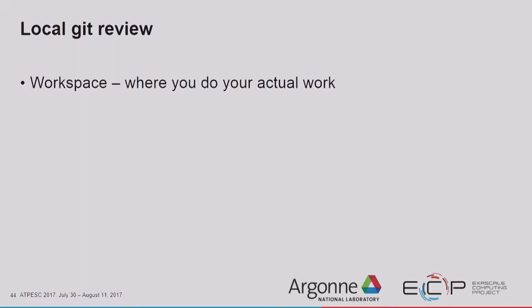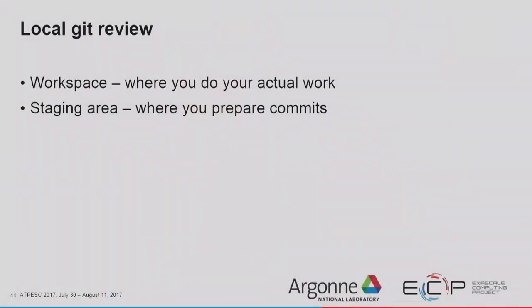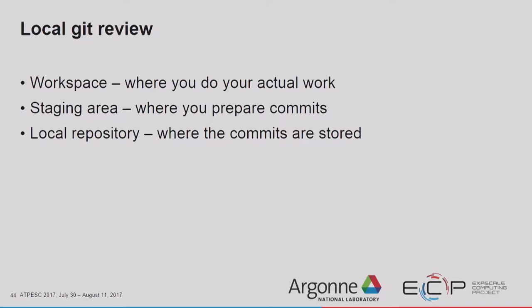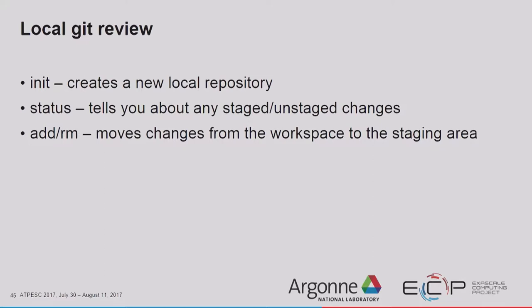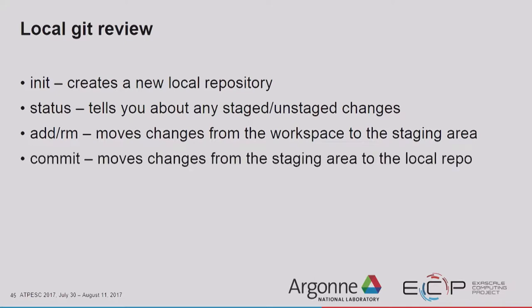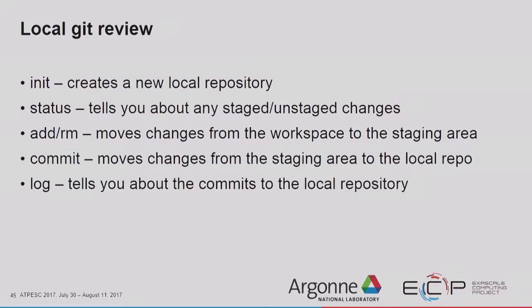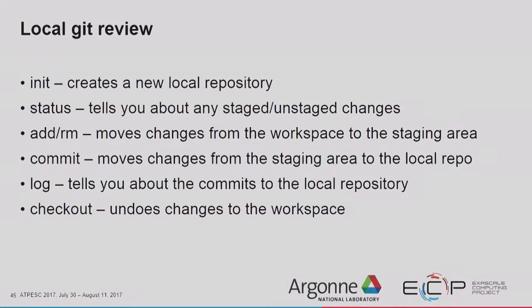To review: the workspace is where you do your actual work — your kitchen counter where you were scooping mashed potatoes, or where you're hacking on your C++ code. The staging area is where you prepare your commits — the area you take the picture of. The local repository is where the commits are stored — your photo album. `init` creates a new local repository. `status` tells you about staged and unstaged changes. `add` and `remove` move things between workspace and staging area. `commit` moves changes from staging area to local repository. `log` tells you about commits. `checkout` undoes changes to your workspace.